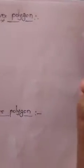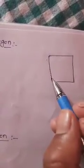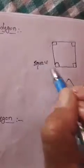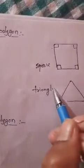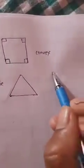Now, convex polygons. Convex polygons are those polygons whose each internal angle is less than 180 degrees. This angle is less than 180, this angle is also less than 180 — if every angle is less than 180 degrees, such polygons are called convex polygons. A triangle is a convex polygon, a square is a convex polygon, every triangle is a convex polygon, a rectangle is also a convex polygon, and the pentagon I have drawn is also a convex polygon.